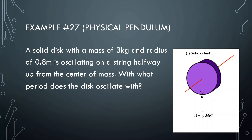One last problem: A solid disk with a mass of 3 kg and a radius of 0.8 meters is oscillating on a string halfway up from the center of mass. With what period does the disk oscillate? The disk is oscillating from a point halfway between the center and the rim, and we want to know the period from that point. We again use the parallel axis theorem to find the inertia at that given point.